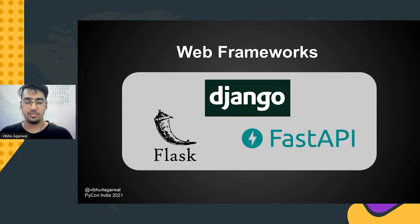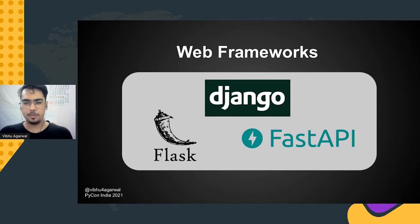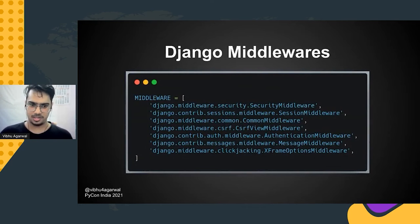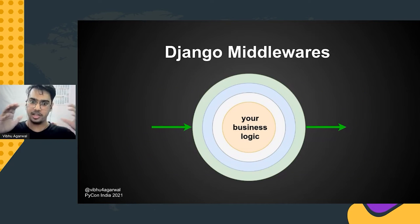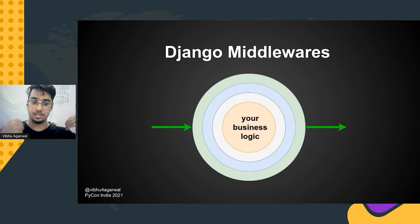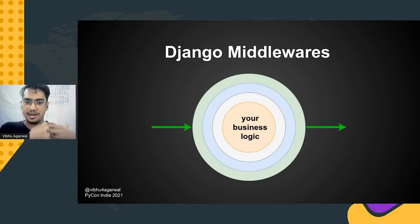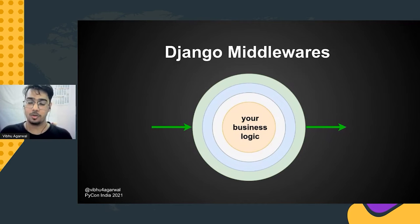Django is a very mature, highly maintained web framework and one of my favorites — it provides a lot of features using middlewares. What Django middlewares do is add extra layers between your web framework and your business logic. Whenever a request arrives, the web framework handles it, executes some code, hands it to the first middleware layer, which hands it to the second, and so on, until it reaches your business logic — then reverses back. That's how Django middlewares add a lot of features to your codebase.